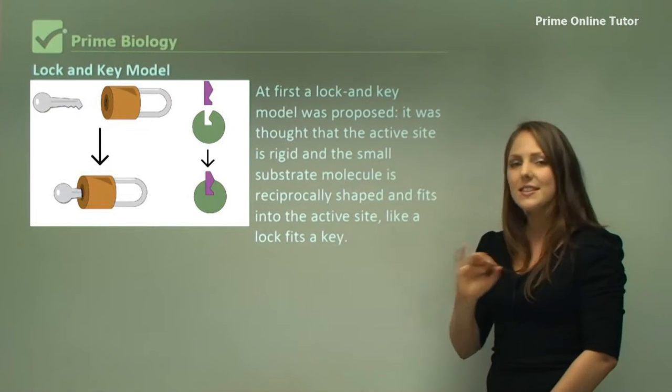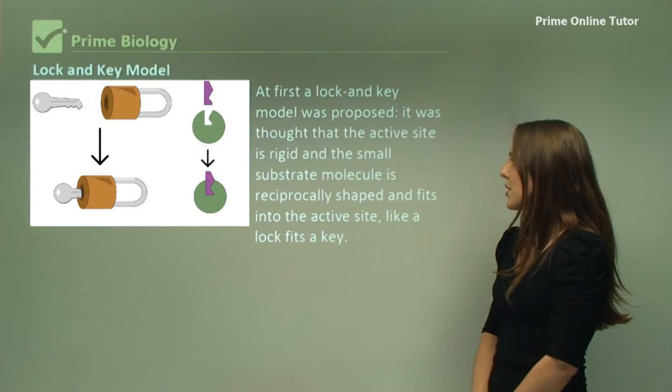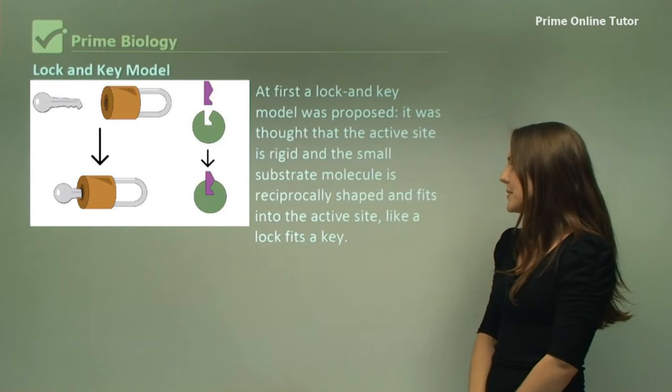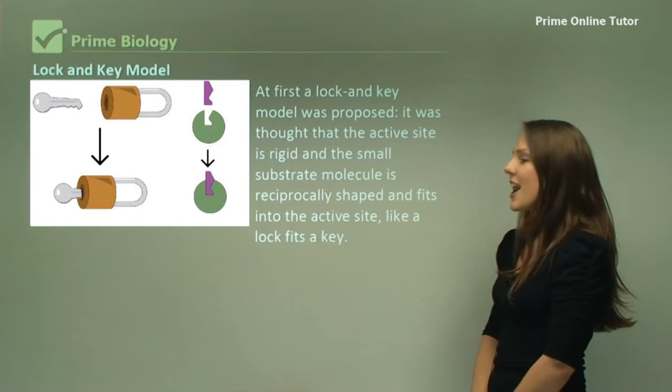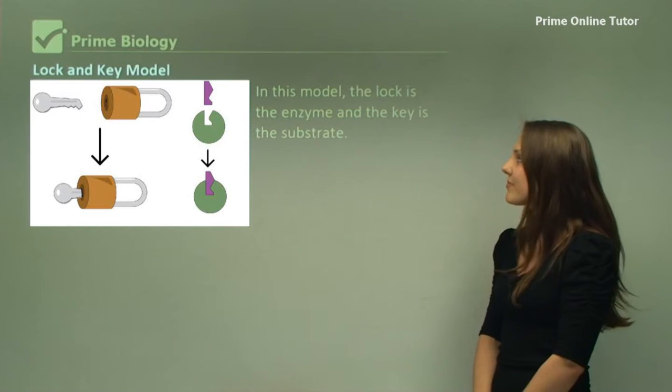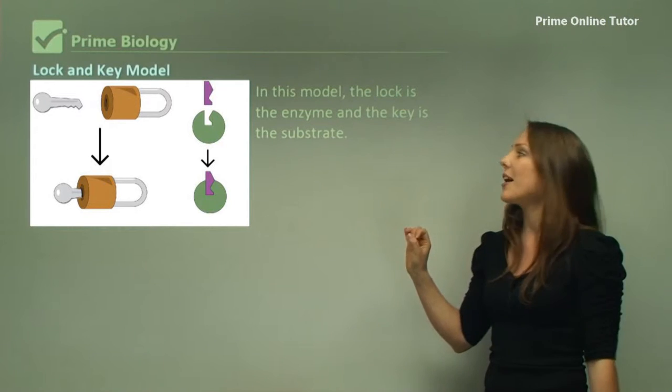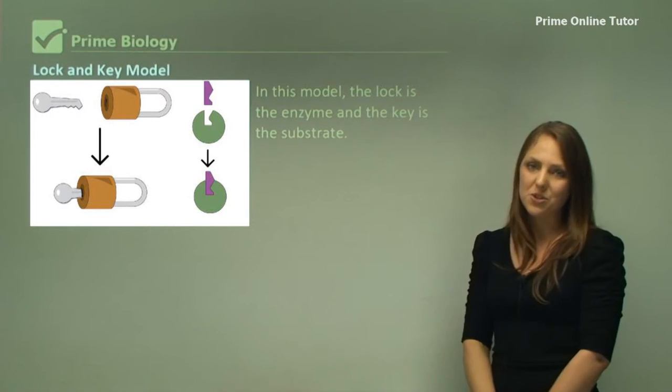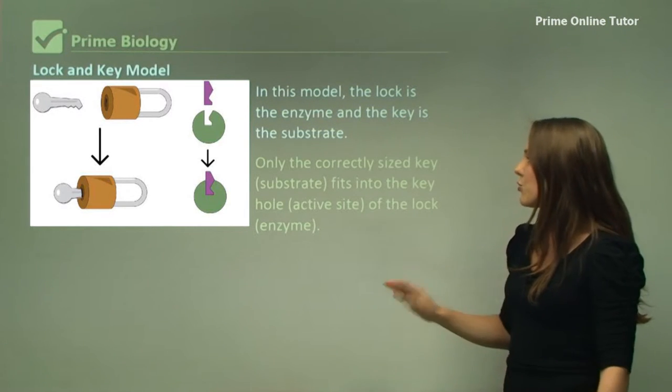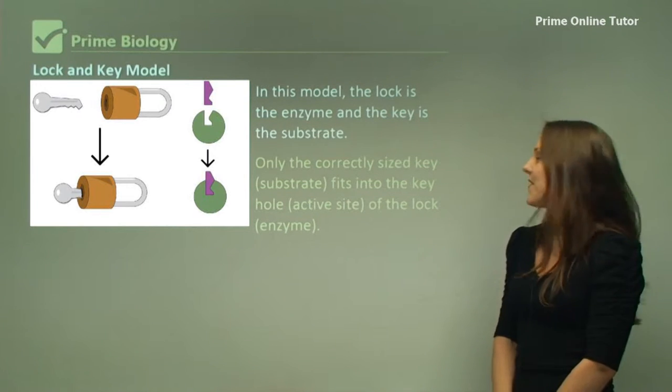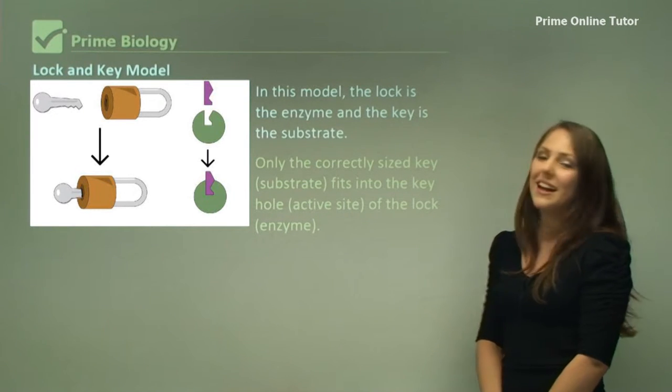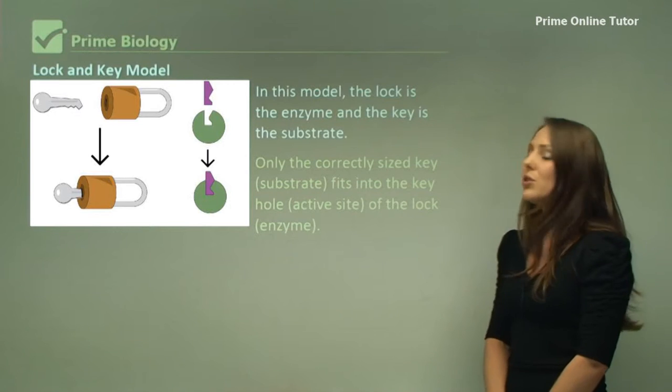The small substrate molecule is reciprocally shaped and fits into the active site like a lock fits a key. In this model, the lock is the enzyme and the key is the substrate. Only the correctly sized key or substrate fits into the keyhole or active site of the lock, which is the enzyme.